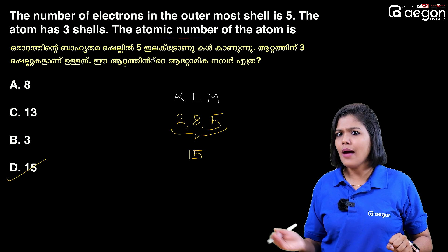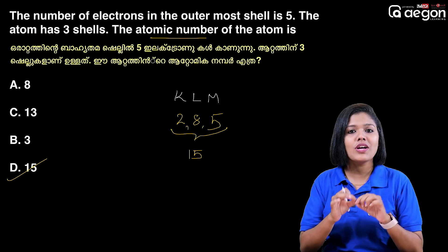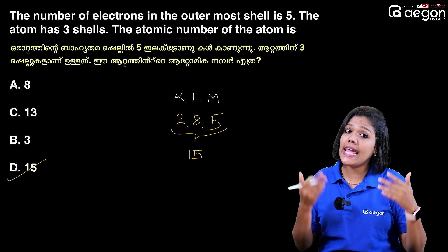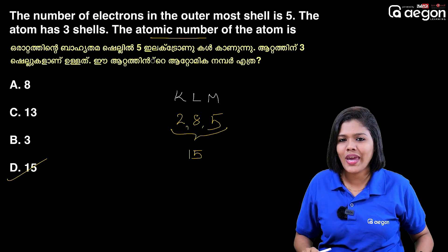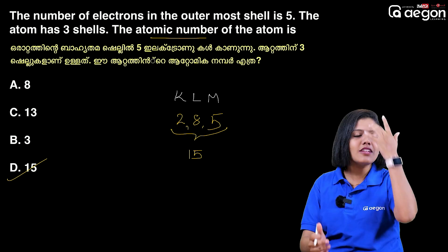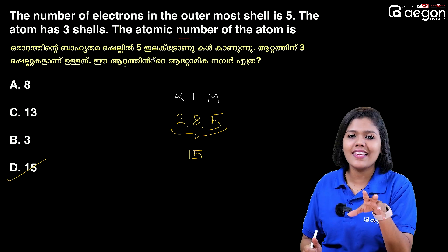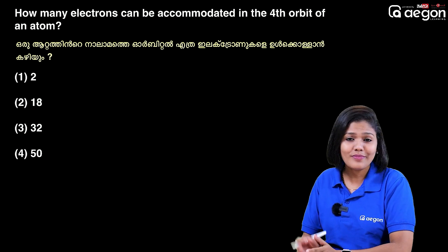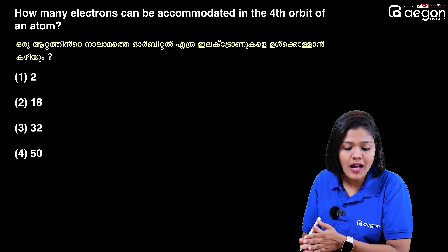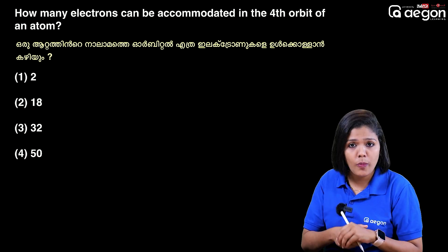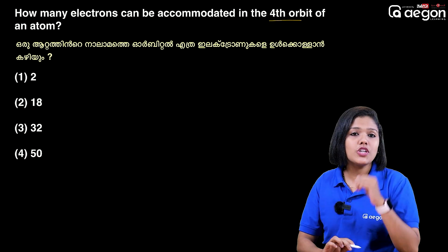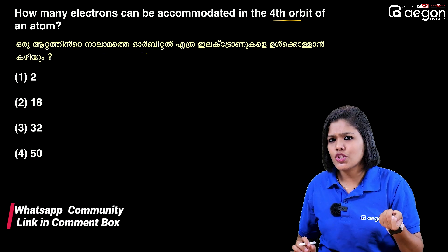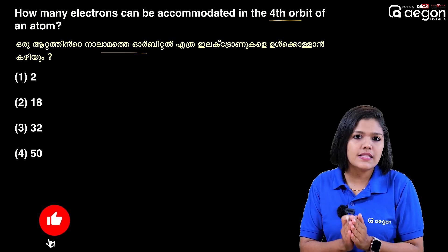So, if we learn a concept, it will be clear how it works. I will answer a question. Those of you looking at the concept, compute this. This is a homework item! How many electrons can be accommodated in the fourth orbit of an atom — the 4th orbit? How many electrons maximum? Comment in the comment box.